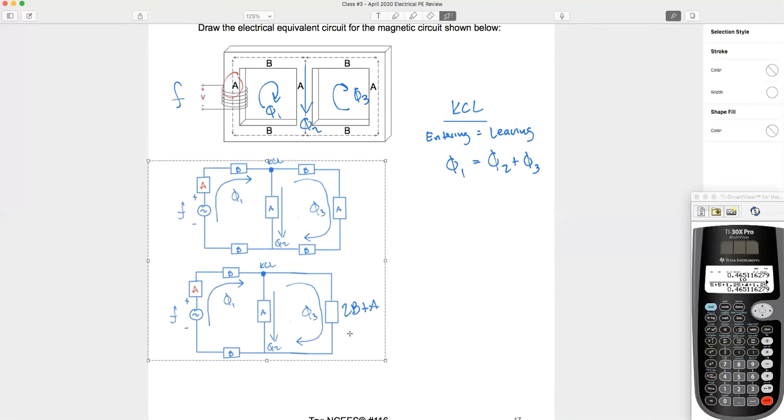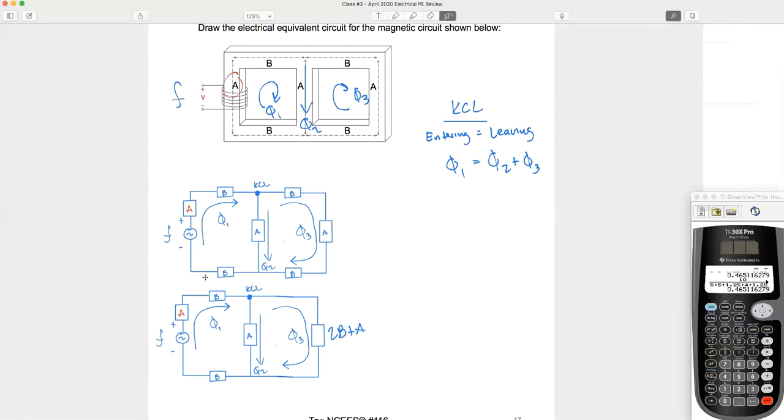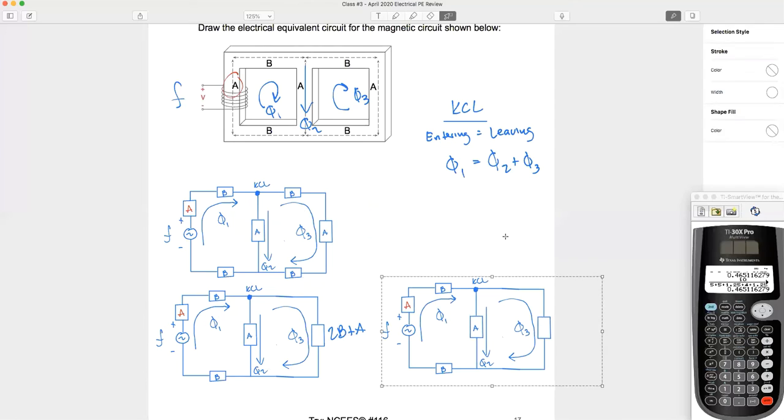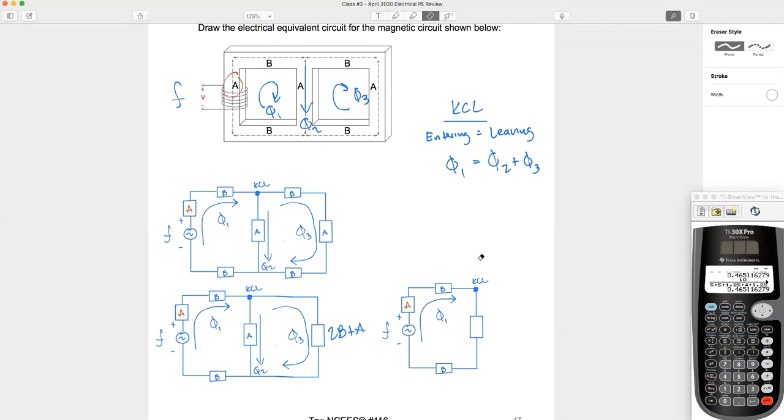What if I wanted to take it one step further? Let's make this to the left. There we go. What if we want to take it one step further and just have one single series loop? In other words, what would this look like? What's this reluctance equal to right here? We've got two B plus A in parallel with A, right? So this is just A in parallel with two B plus A.